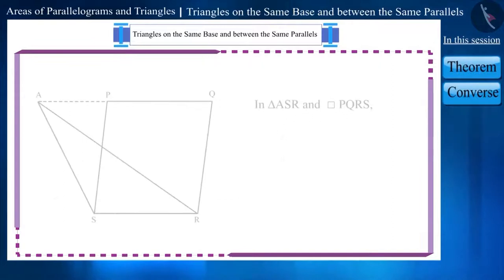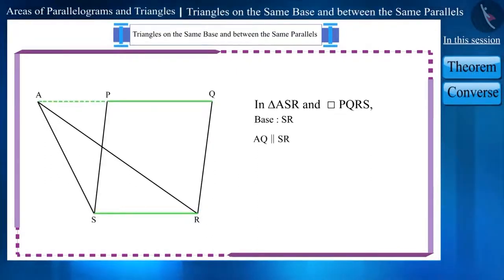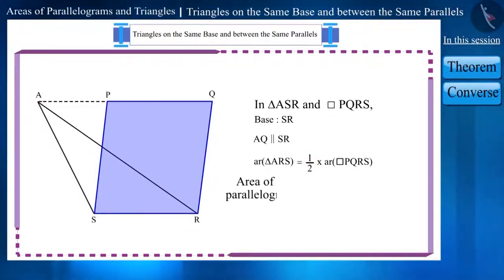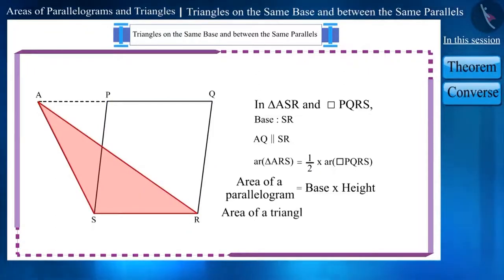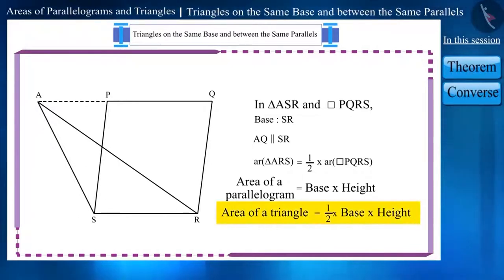We know that if a triangle and a parallelogram are situated on the same base and between the same parallel lines, then the area of the triangle will be 1/2 times that of the parallelogram. The formula for the area of a parallelogram is base multiplied by height, so the area of a triangle would be 1/2 of that result. Friends, in our previous classes also, we have used this formula to find the area of triangles.